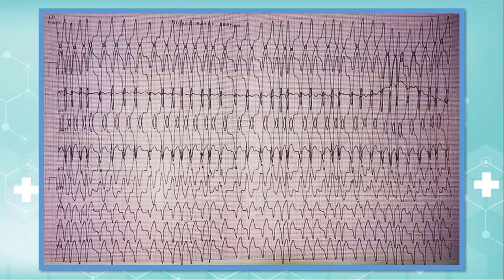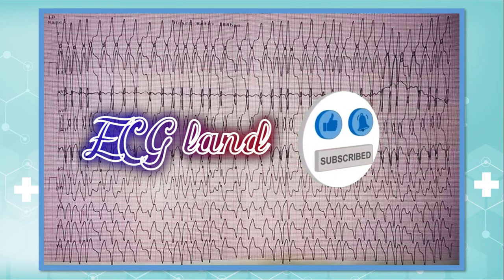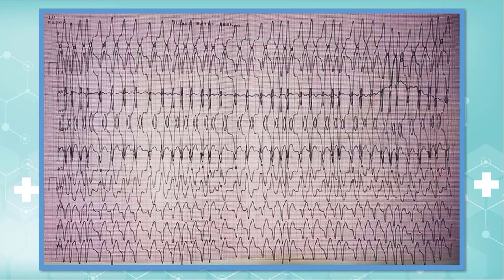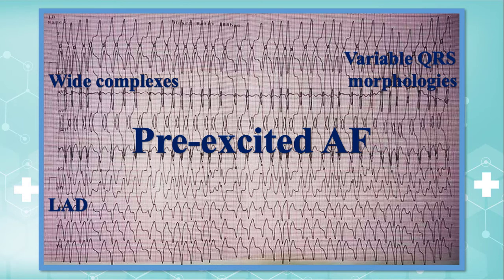The last part is overall interpretation. To interpret our EKG properly, we must make a list of abnormal findings. In this strip, the major abnormal finding is tachyarrhythmia due to pre-excited AF. Other minor abnormal findings — like wide QRS complexes, left axis deviation, variable QRS morphologies, and pathologic Q waves — are owing to the accessory pathway as well. So, the cause of palpitation attacks in this patient is pre-excited AF.